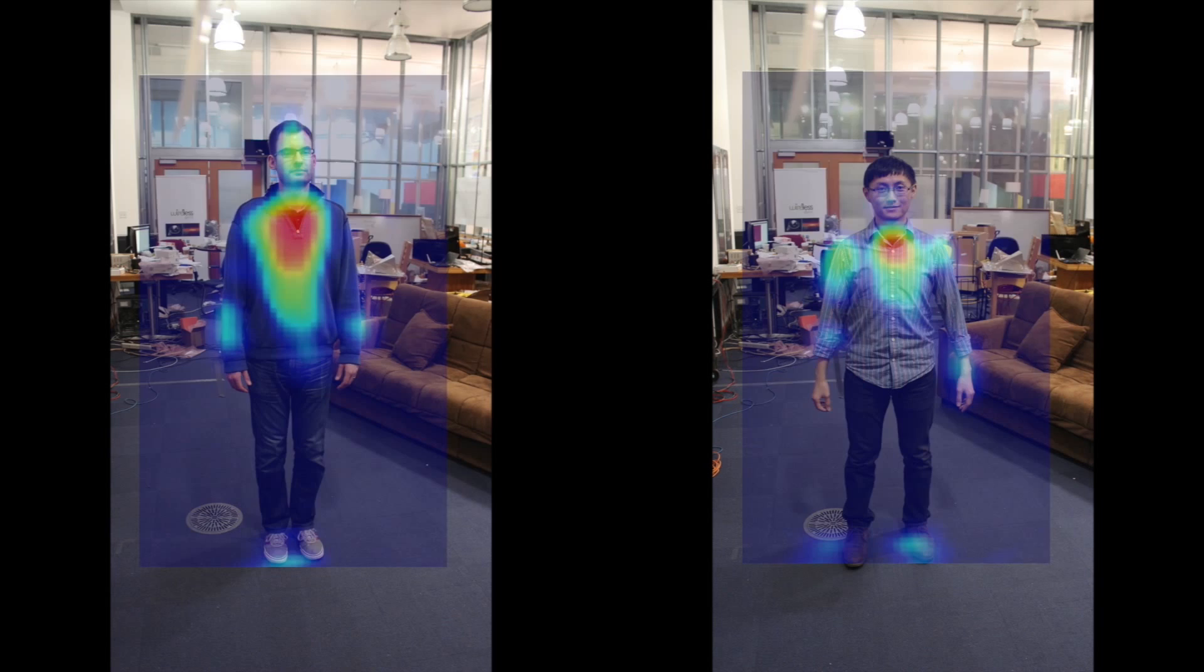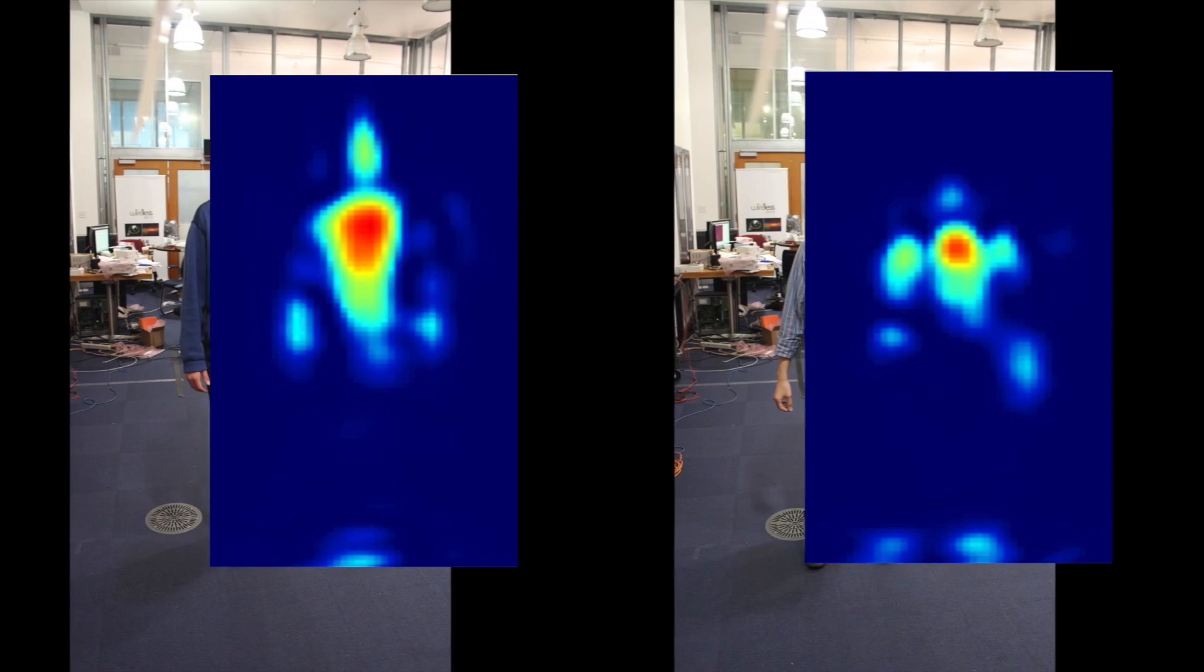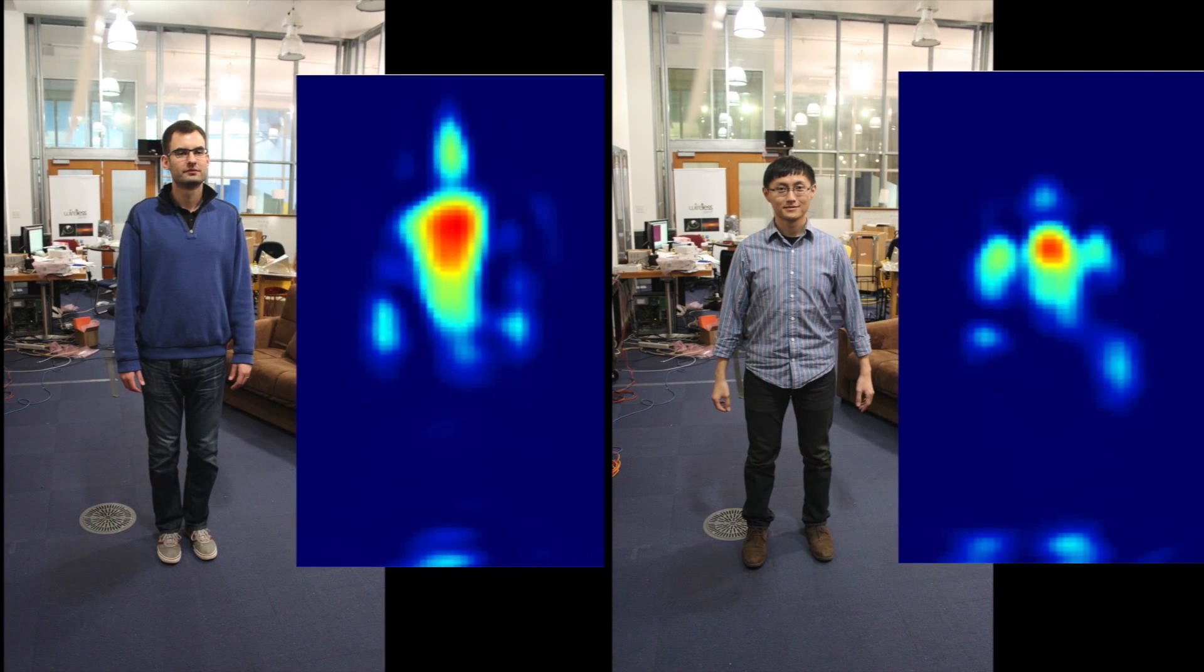The device can distinguish between different people behind the wall. For example, here we ask two different people to stand behind the wall, and this is the output of our device. By training on different subjects, we can use a classifier to distinguish between them.